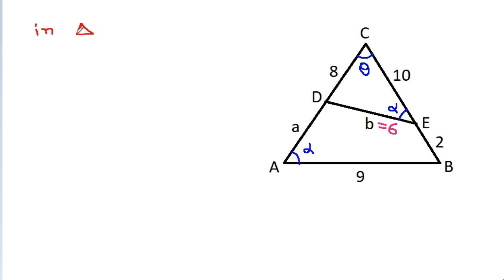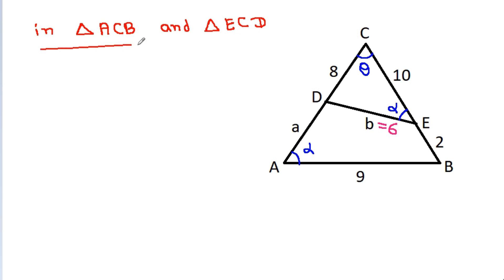In triangle ACB and triangle ECD, we apply the same angle relationships to find the remaining unknown.